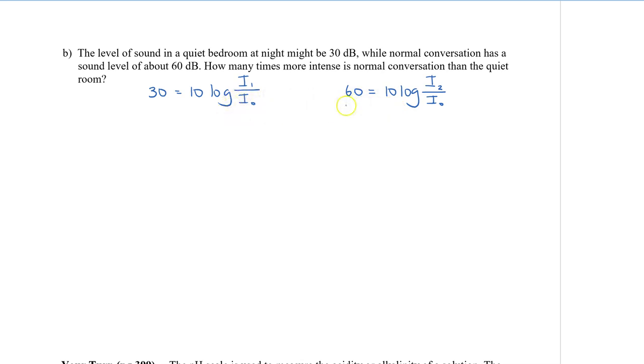Now remember that when we divide, we are actually going to be subtracting our exponents. So we are going to actually subtract the two logs. Since the second one is bigger, we are going to take 60 minus 30. And I will put that on the left side.